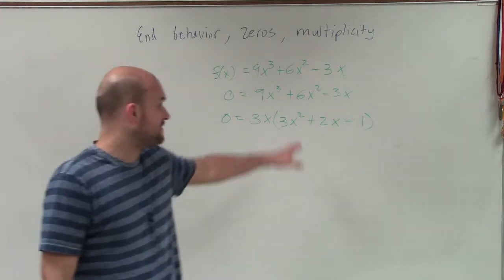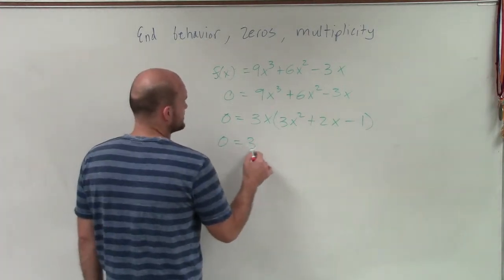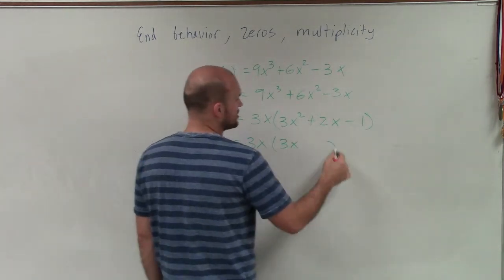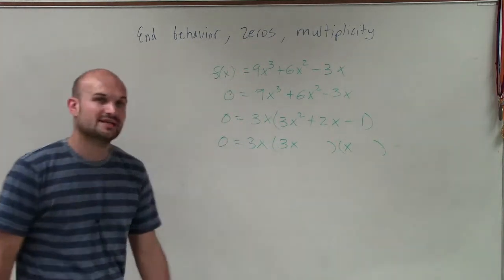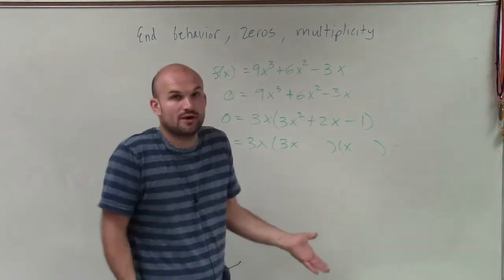Now what I need to do is I need to factor the 3x squared plus 2x minus 1. So now to factor this further, I know that my first two terms have to be 3x and x. That's going to allow me to get to 3x squared. But then I need to determine what two values are going to multiply to give me negative 1.